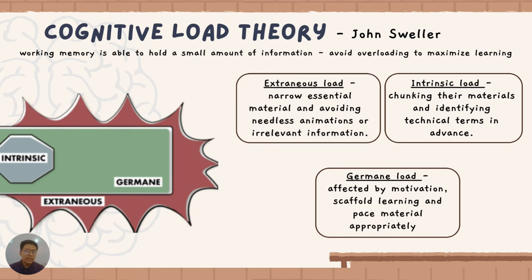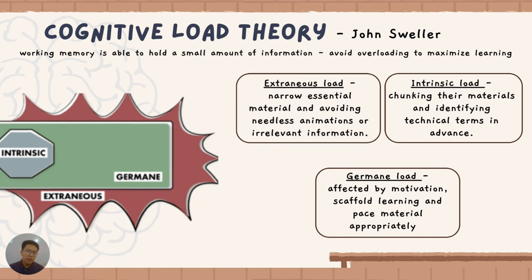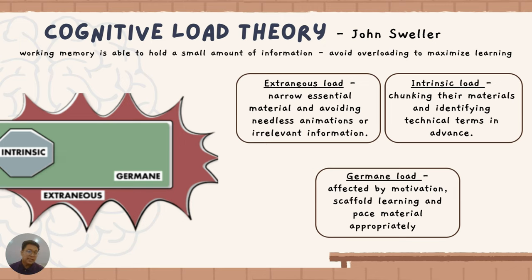Another theory associated with CTML is cognitive load theory with John Sweller. This is an instructional design theory for understanding the way we process information. According to this, working memory is able to hold a small amount of information and we need to avoid overloading it to maximize learning. There are three aspects of cognitive load theory: extraneous load, intrinsic load, and germane load.